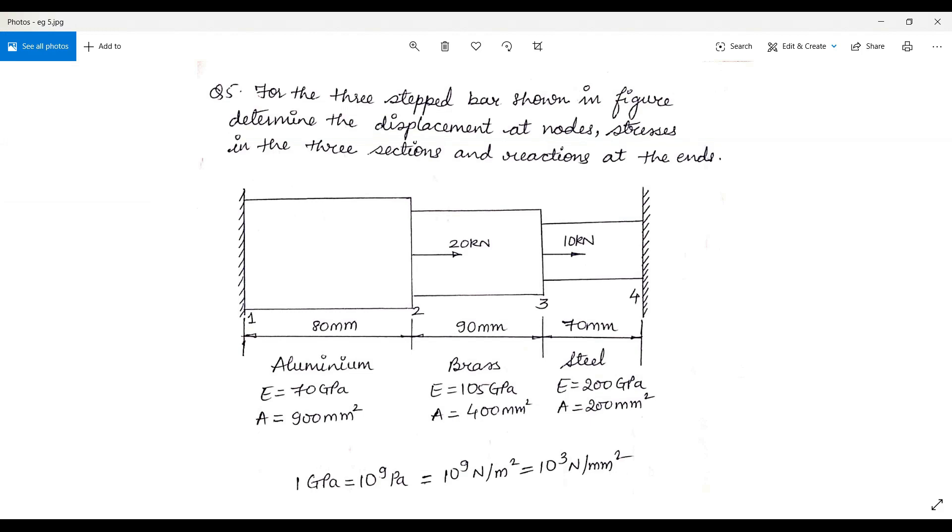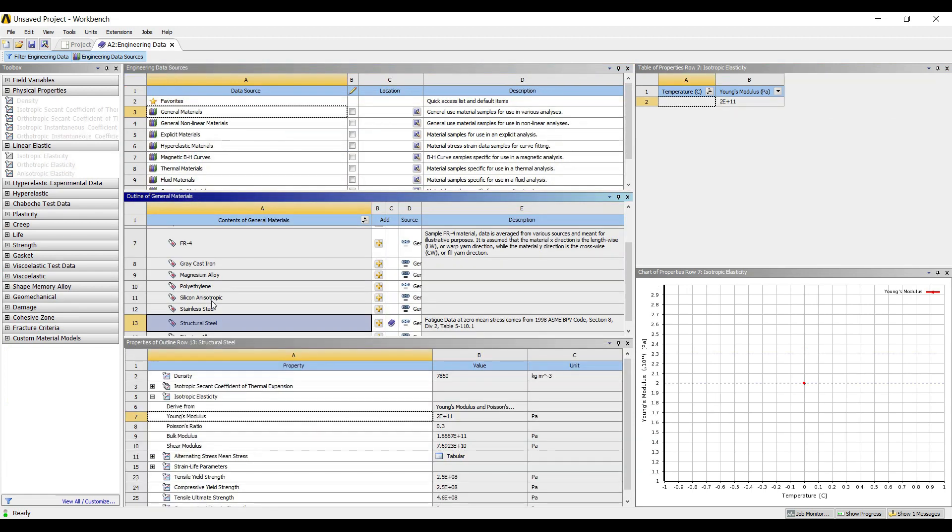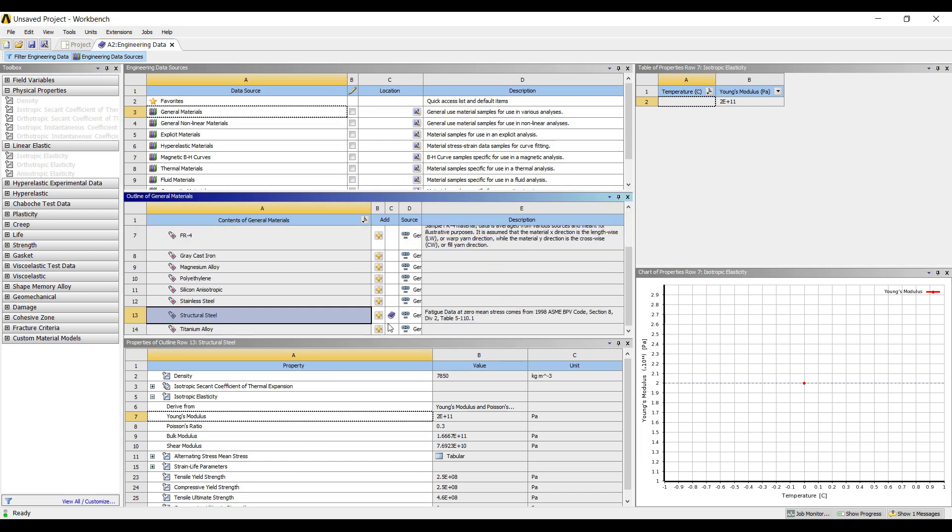Poisson's ratio is something which is very much compulsory, so brass is the material which I have created. Steel is something which is already selected, so I just need to click on aluminum alloy. So I have bookmarked aluminum alloy.